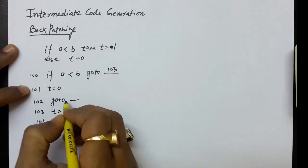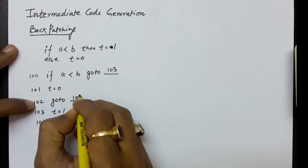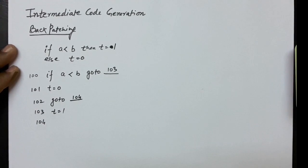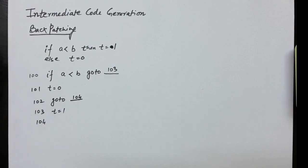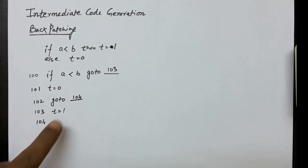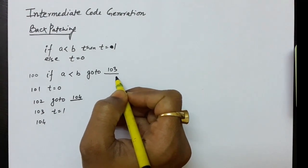After t equals 0 you come to label 104. So in backpatching we write the conditional and unconditional jump statements but leave the labels blank, filling them in later when we correctly determine the target. Labels 103 and 104 are set as part of this backpatching process.